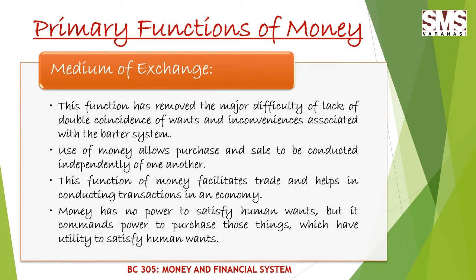This function has removed the major difficulty of lack of double coincidence of wants and inconveniences associated with the barter system. The use of money allows purchase and sale to be conducted independently of one another, and facilitates trading through transactions in an economy. Money has no power to satisfy human wants directly, but it commands the power to purchase those things which have utility to satisfy human wants.